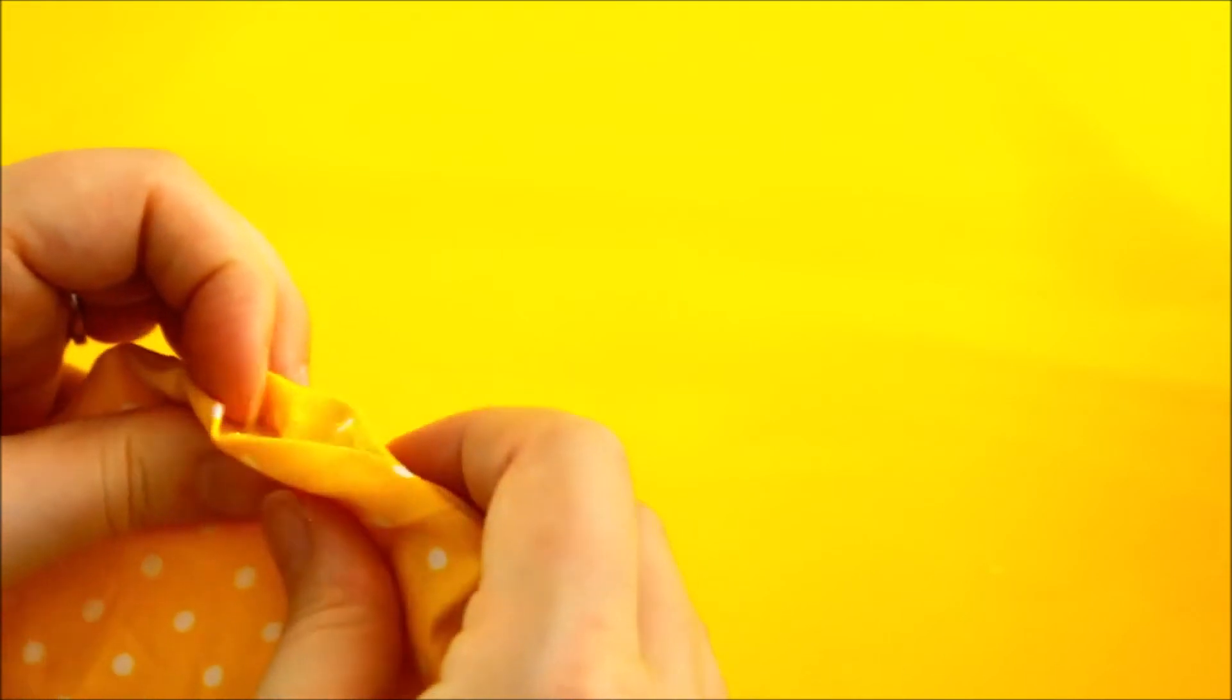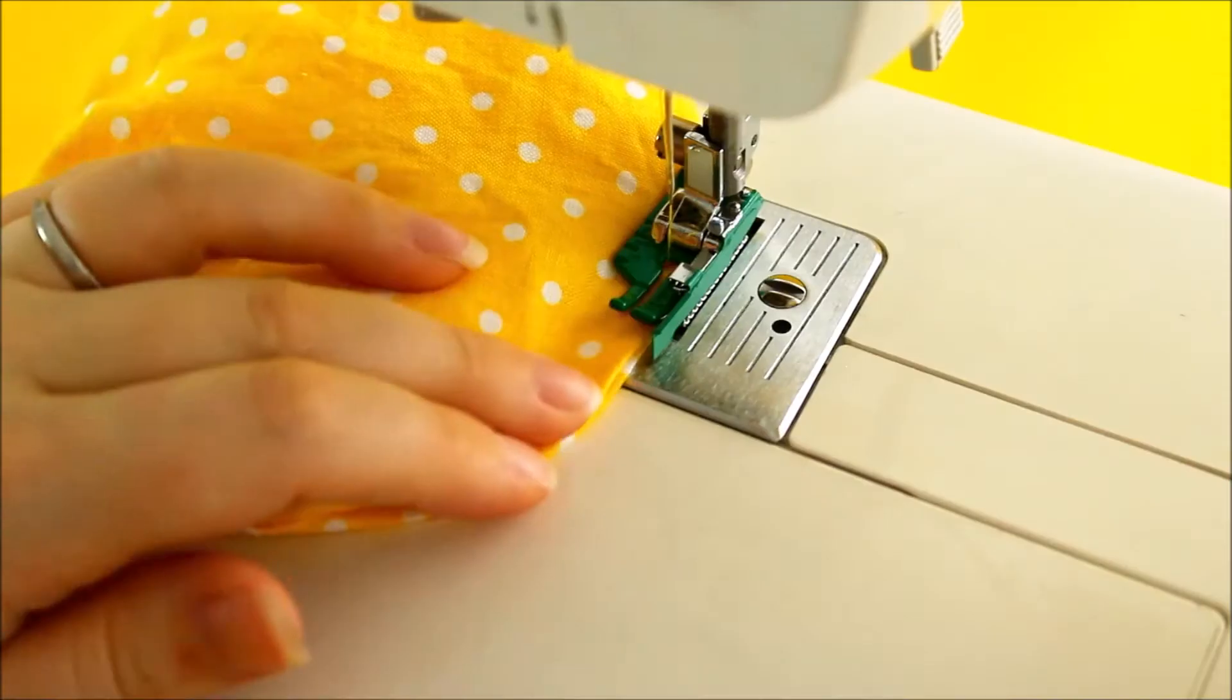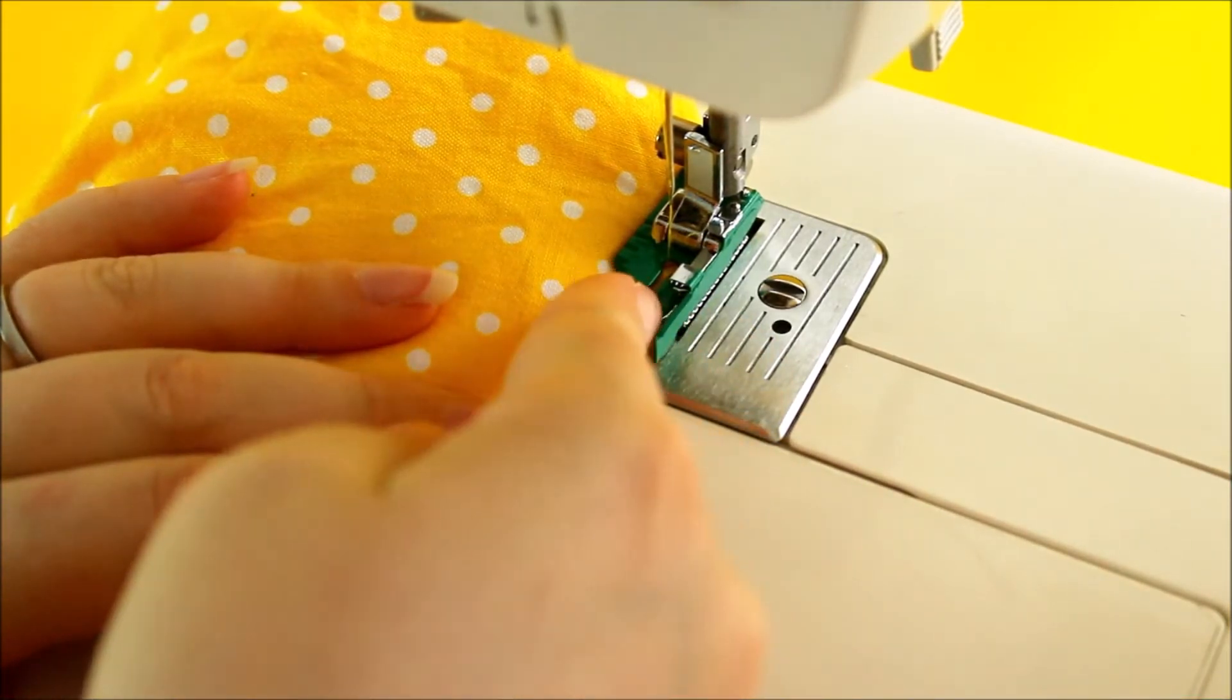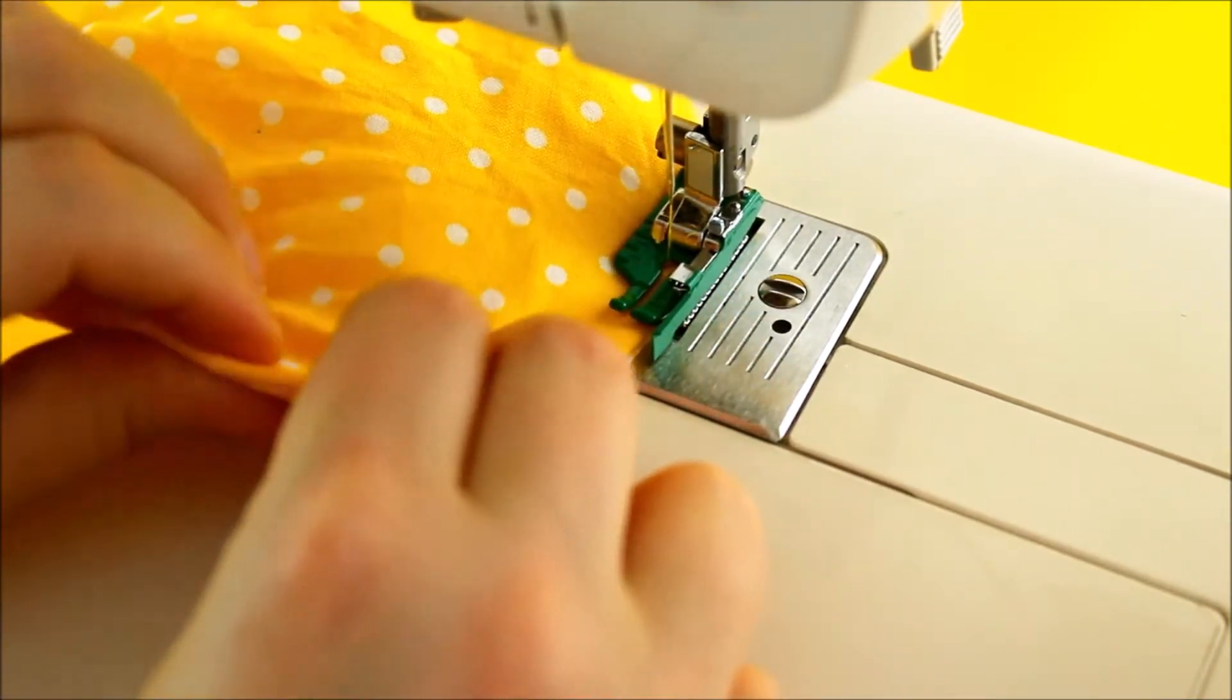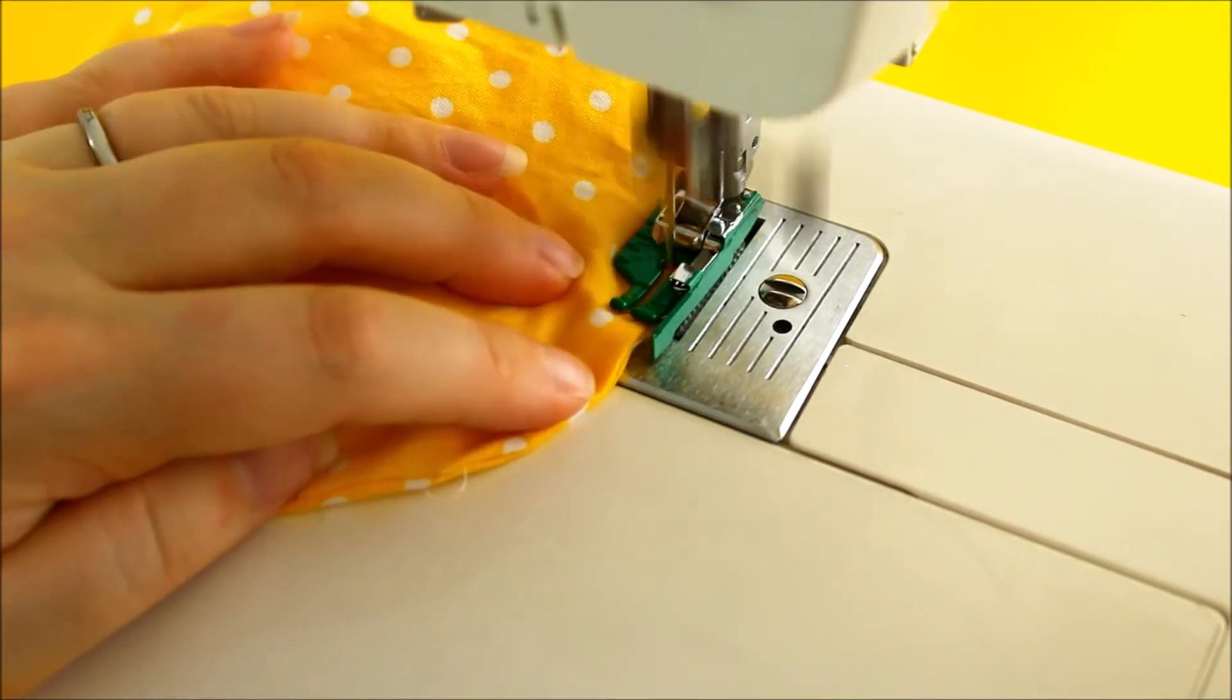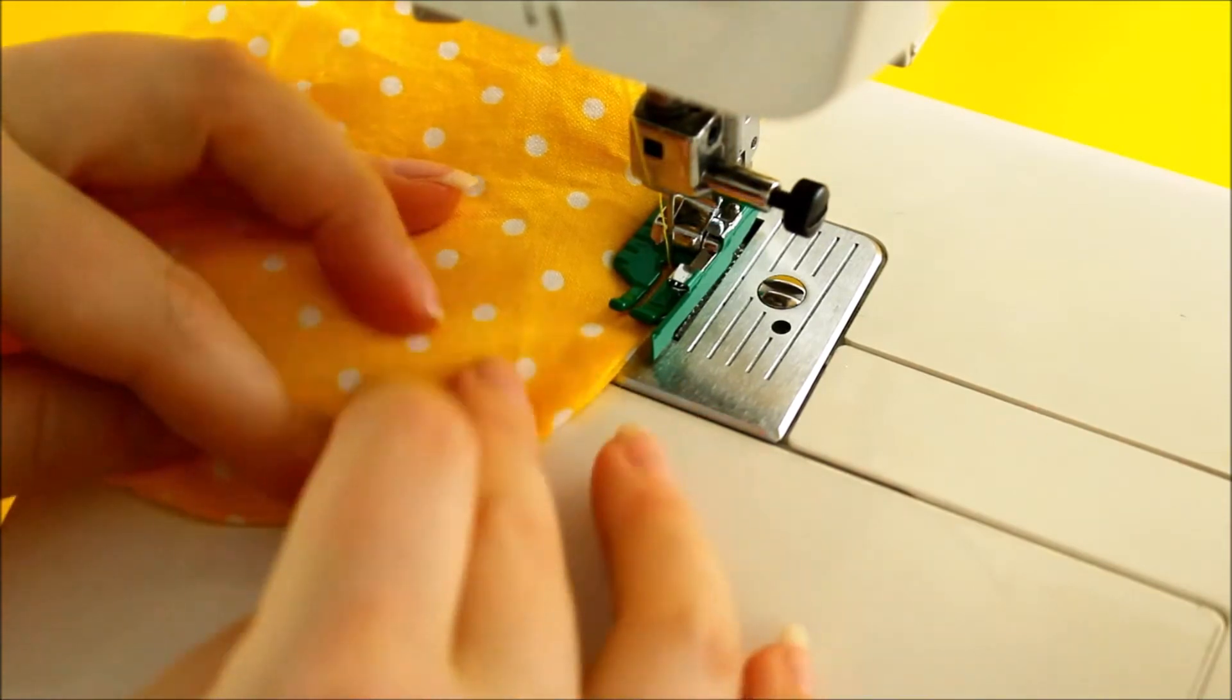We're going to tuck these edges under and then we're just going to do a top stitch all the way around and then that'll be the front of your flower. So I'm just lining the fabric edge up with the outer side of the quarter inch foot and not the actual guide, just so it's a little bit closer to that edge, and then we're just going to stitch all the way through. So a few stitches first just to secure them and then we're going to stitch our way round.